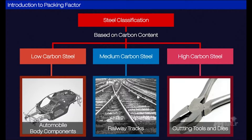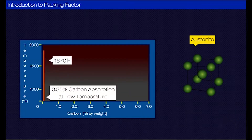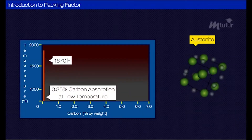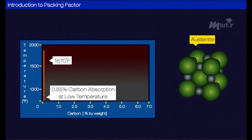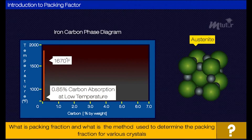Varying the amount of carbon produces several carbon steels. Factors such as atomic radius and packing factor are crucial so that we can derive the best alloys. Let us now further explore what packing fraction is and the method of determination of packing fraction for various crystals.